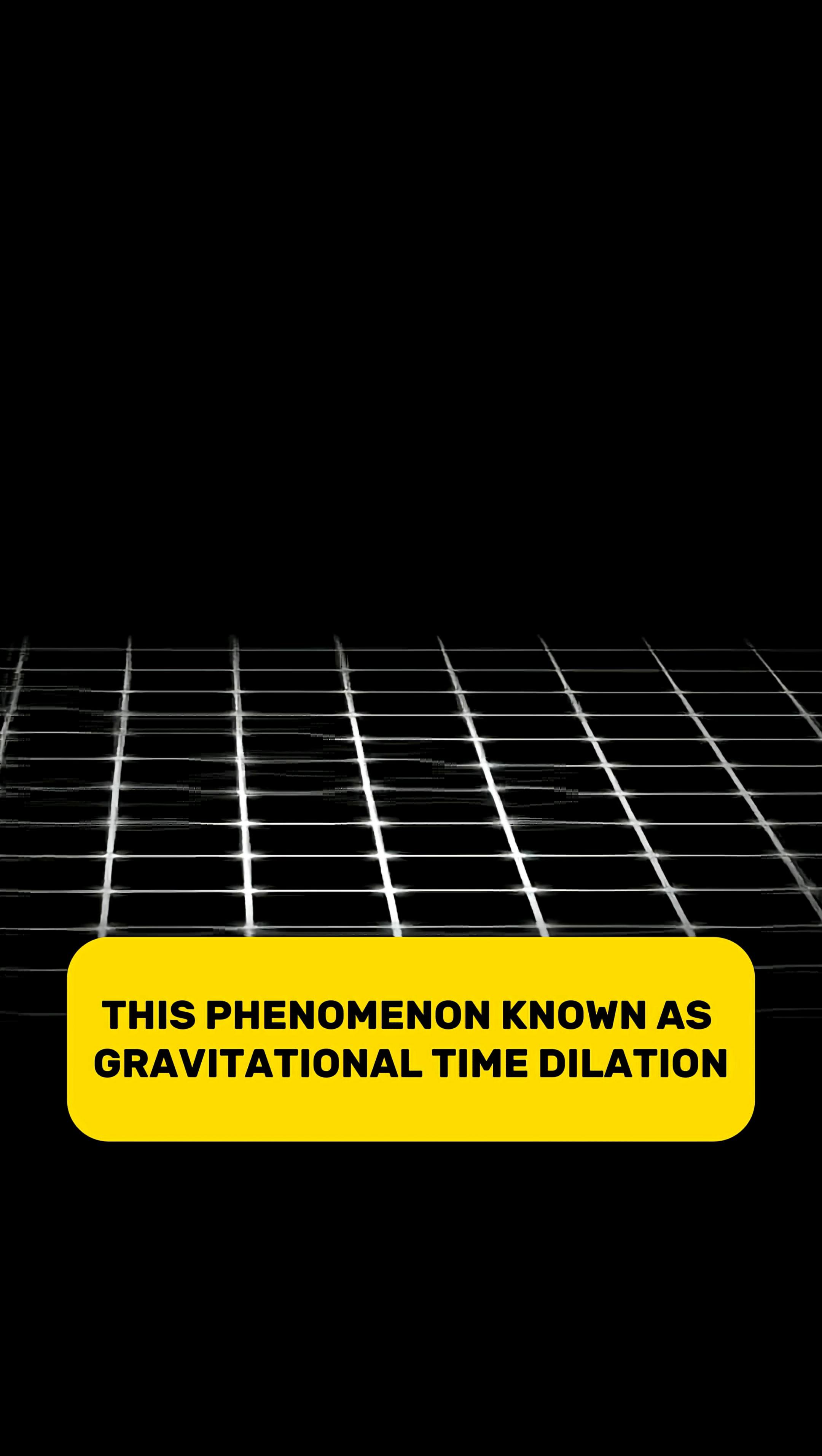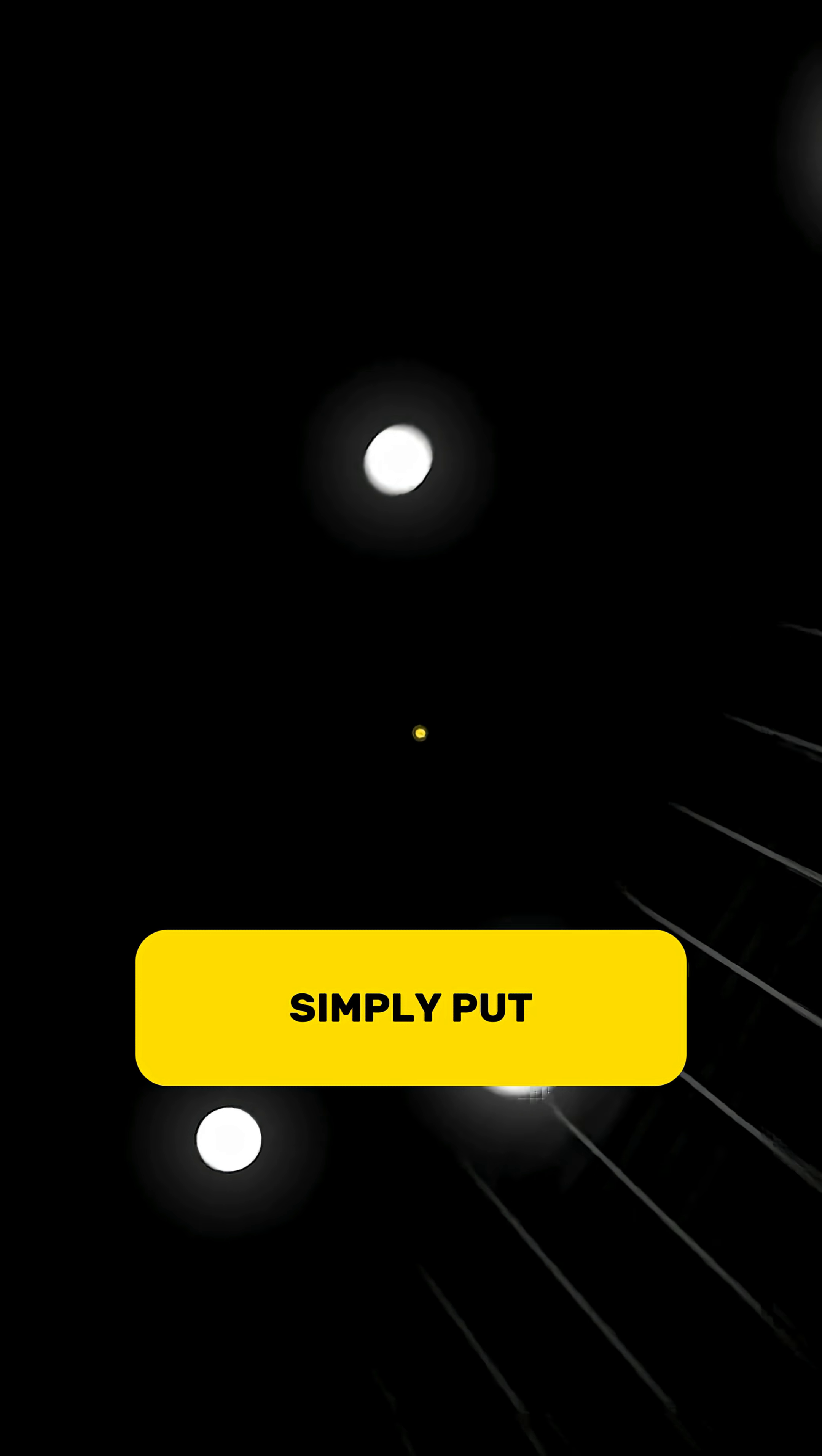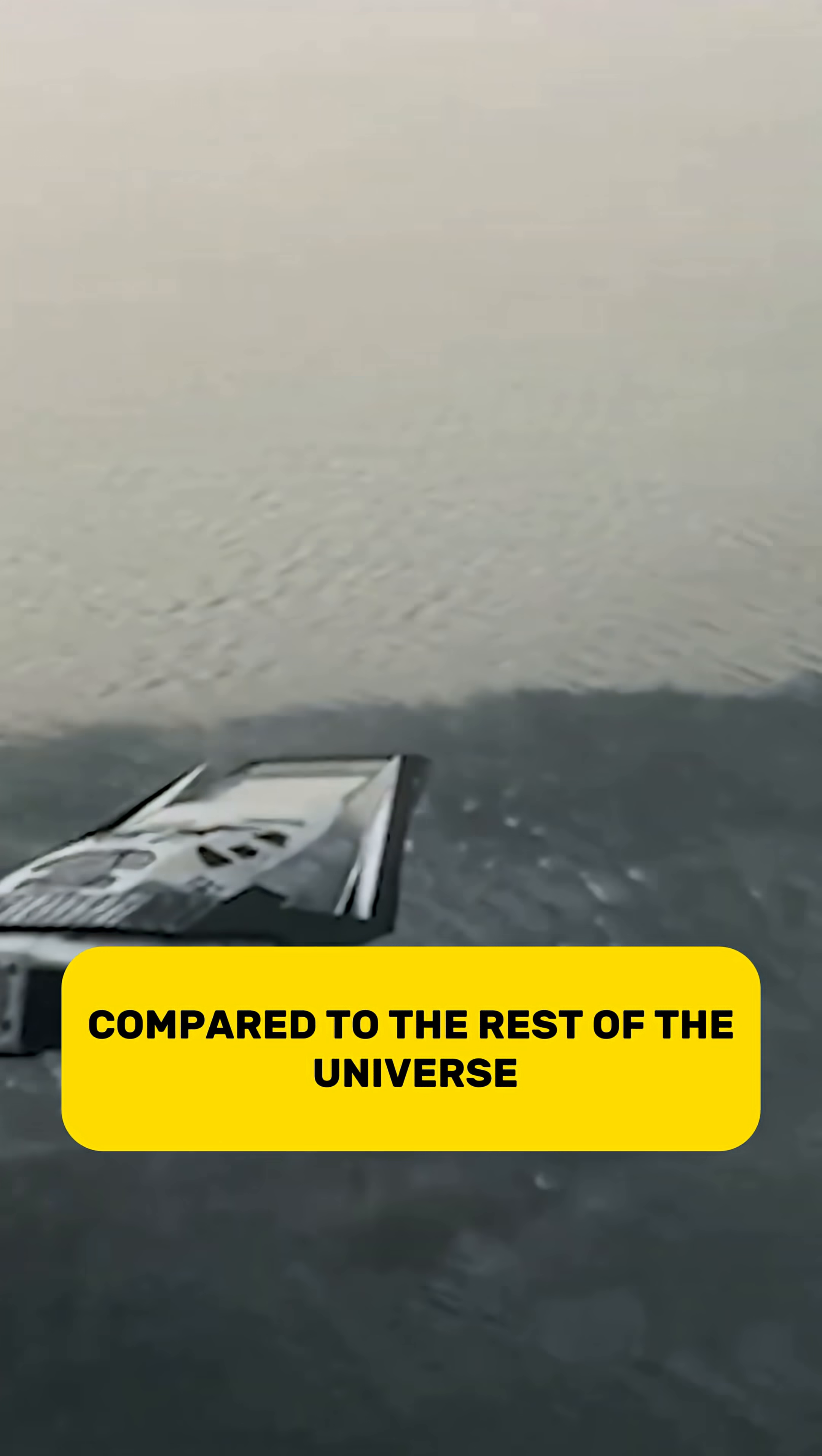This phenomenon, known as gravitational time dilation, is explained by Einstein's theory of general relativity. Simply put, mass bends spacetime around it, causing time to move slower in that region compared to the rest of the universe.